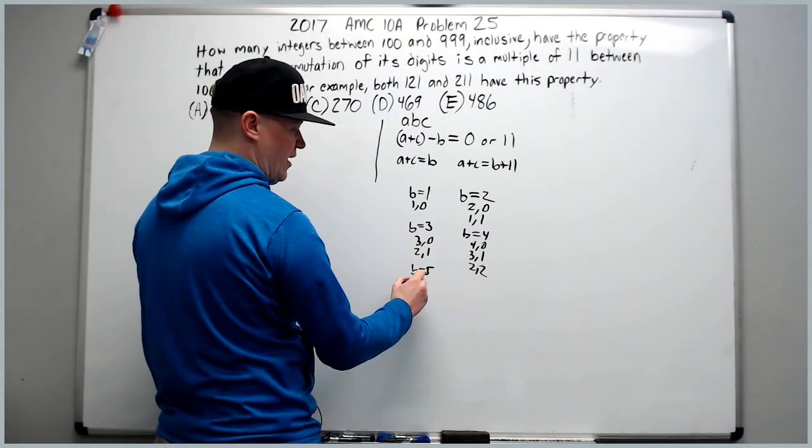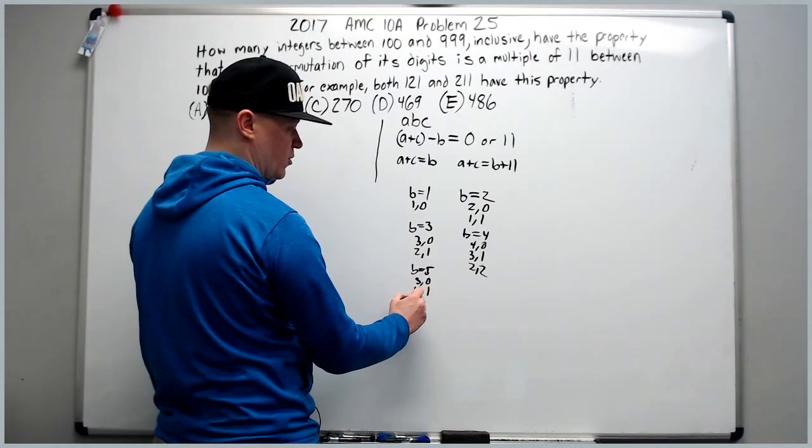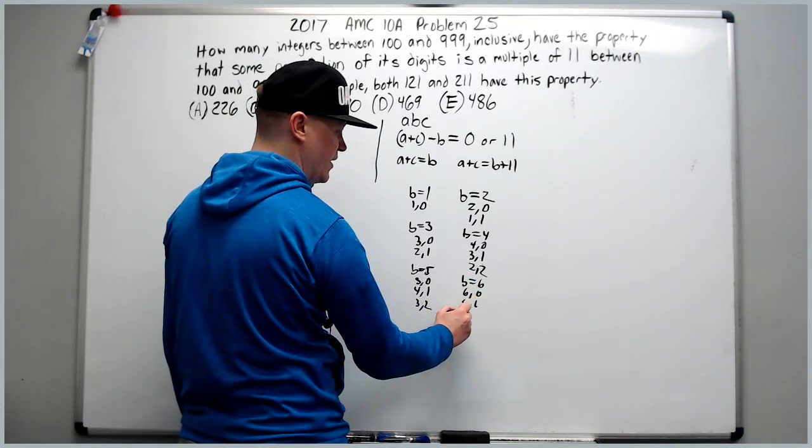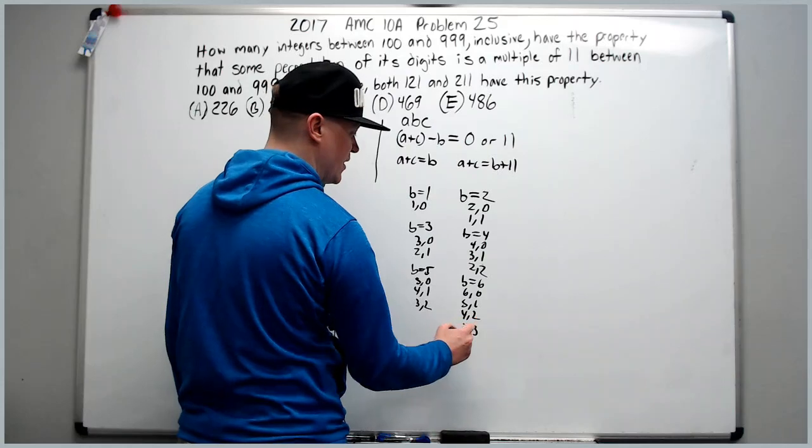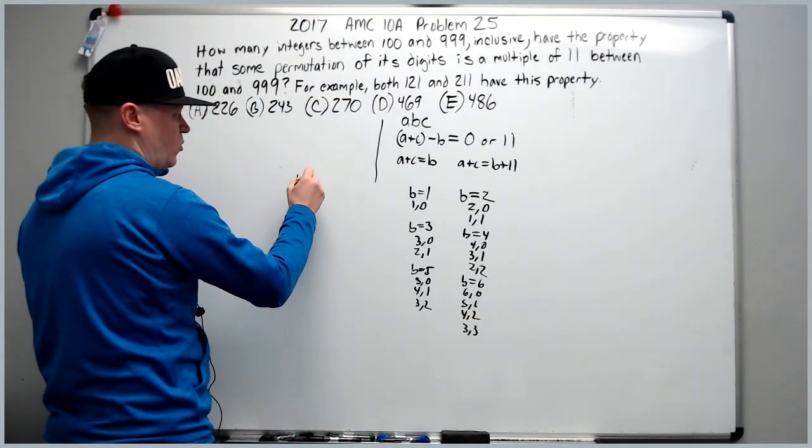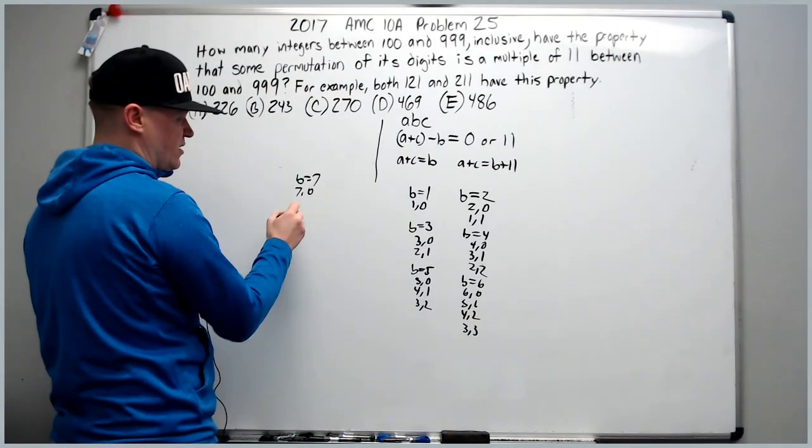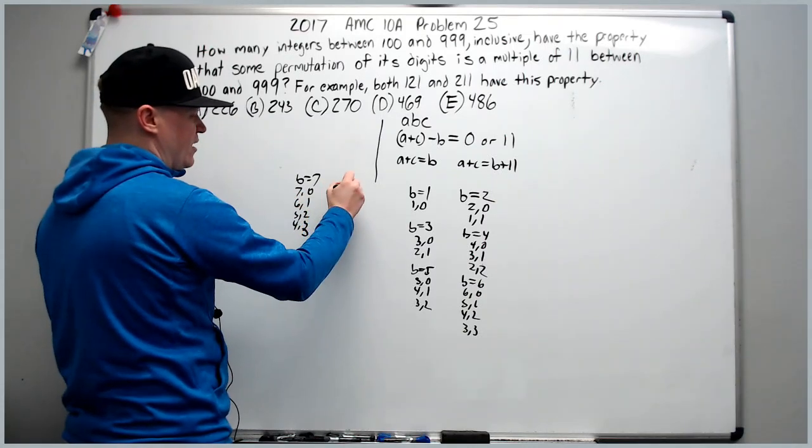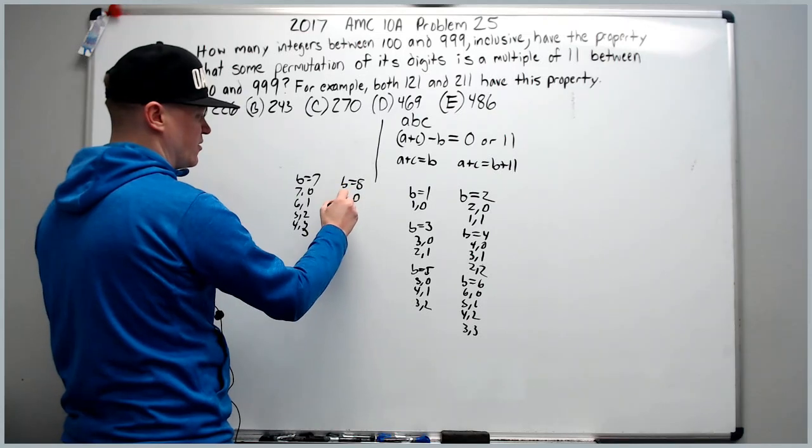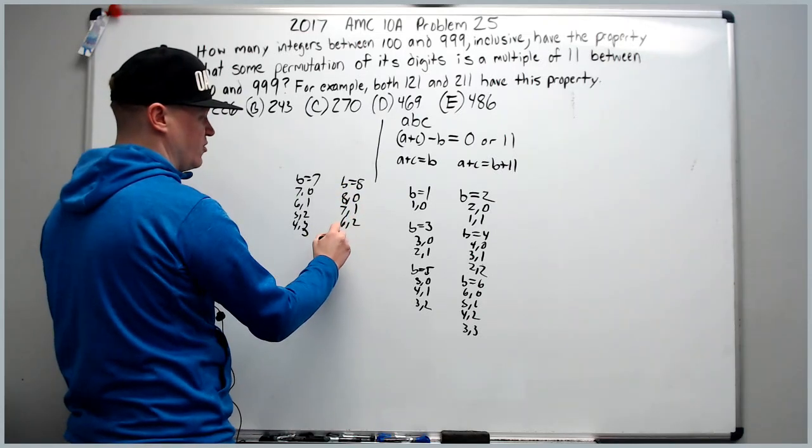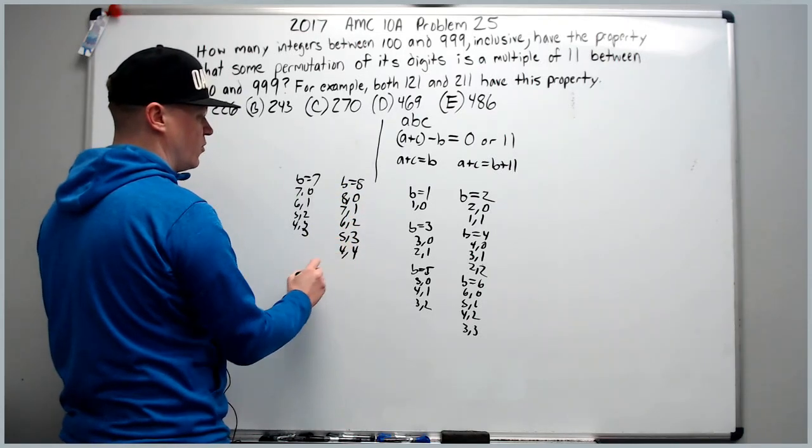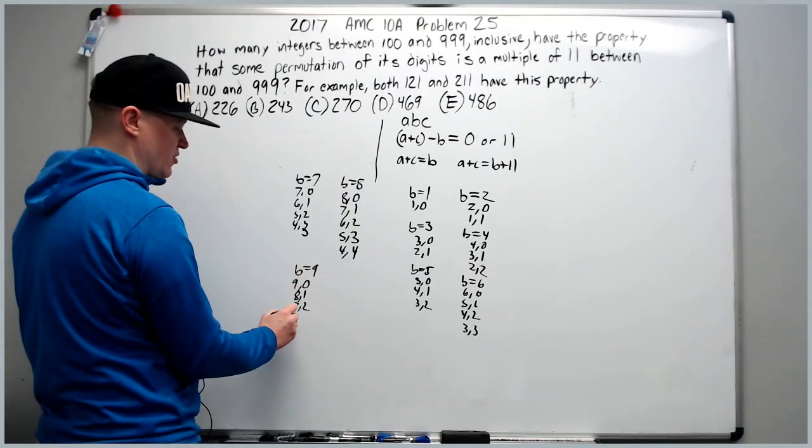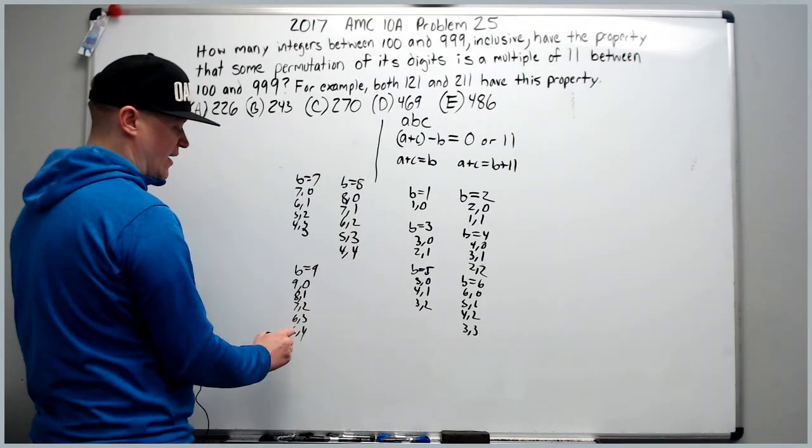So B equals 3. This could be 3 and 0 and 2 and 1. Over here, we'll do B equals 4. We'll get 4, 0, 3, 1, and 2, 2. Noticing that these numbers just add to 4, the B value. Again, A plus C equals B. So B equals 5 will be 5, 0, 4, 1, 3, 2. B equals 6 will be 6, 0, 5, 1, 4, 2, and 3, 3. B equals 7 will be 7, 0, 6, 1, 5, 2, 4, 3. B equals 8 will be 8, 0, 7, 1, 6, 2, 5, 3, 4, 4. And finally, B equals 9 is 9, 0, 8, 1, 7, 2, 6, 3, and 5, 4.